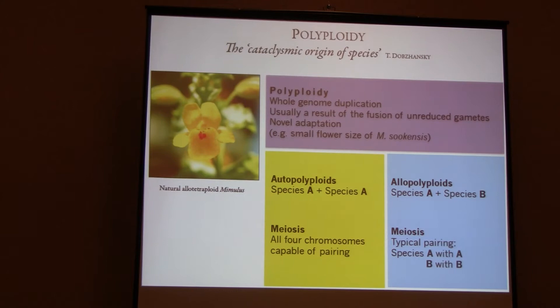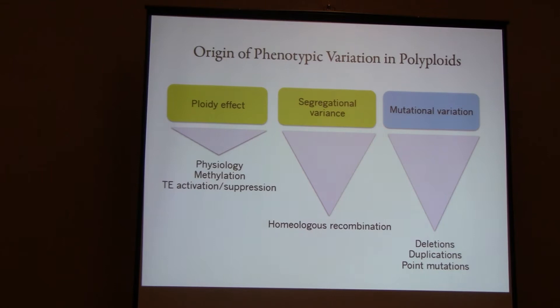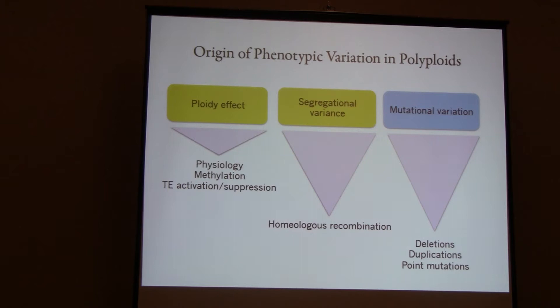There are three mechanisms that can generate phenotypic variation in polyploids — both variation between independently derived polyploids and between polyploids and their diploid progenitors. The first two are ploidy effect and segregational variants, which can be observed pretty soon after polyploid formation. Ploidy effect means that immediately after polyploidization there is a phenotypic difference due to things like cell size differences or methylation. There can also be segregational variants arising from homeologous recombination, and mutational variation — only now you have twice the genetic material.